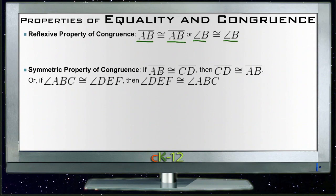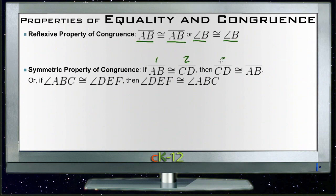The symmetric property of congruence says that if line AB is exactly the same as line CD, then CD is exactly the same as AB. That's very similar to the algebra version — if 1 equals 2, then 2 equals 1. It works the same way with angles: if angle 1 is congruent to angle 2, then angle 2 is congruent to angle 1.